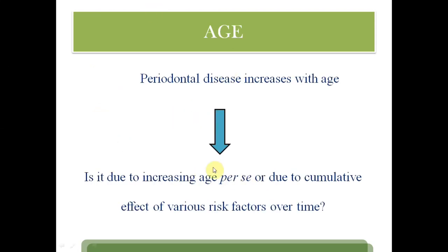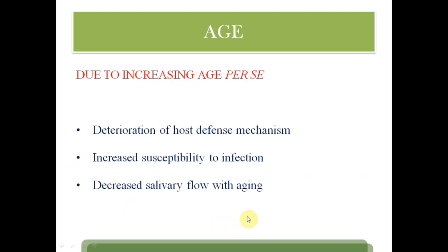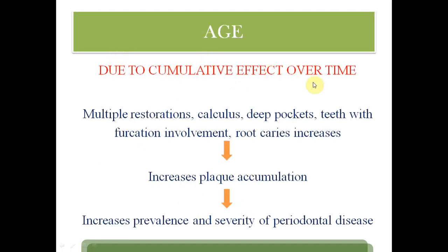There are two mechanisms regarding age. It might increase due to the cumulative effect of risk factors over time — as age increases, there will be deterioration of host defense mechanisms, more susceptibility to infection, and less salivary flow. It could also be due to cumulative effects like calculus deposits, deep pockets, furcation involvement, and root caries, which increase plaque accumulation, more bacteria, causing periodontitis.